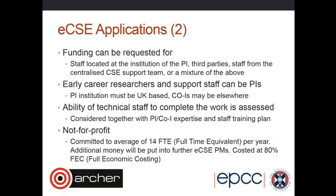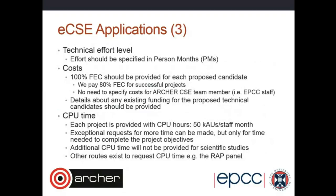We are committed to funding an average of 14 full-time equivalents (FTEs) per year. Any money left over is pushed back into the system, so we will end up funding more than 14 FTEs a year. We use FEC costings — a very similar process to what you would do for EPSRC or NERC funding at your university. You specify the effort requested in person-months, and we pay 80% FEC, which is the same as the research councils. If you are requesting effort from an ARCHER CSE team member, you don't need to specify the cost as those are already known.